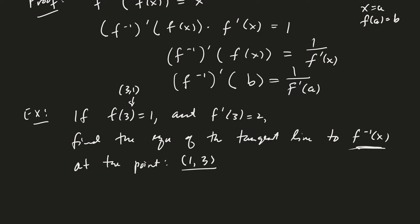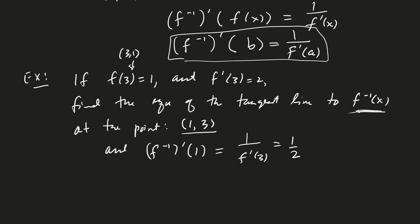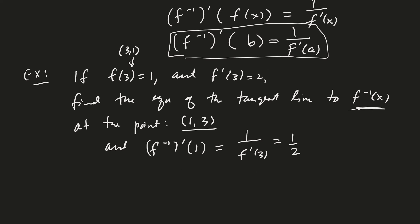The derivative of f⁻¹ at 1 equals 1 over f'(3), which is what we just proved. So that's 1/2. Therefore the equation of the tangent line is y minus 3 equals 1/2 times (x minus 1).